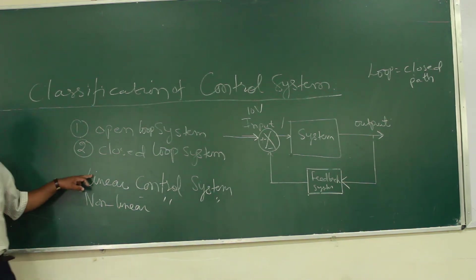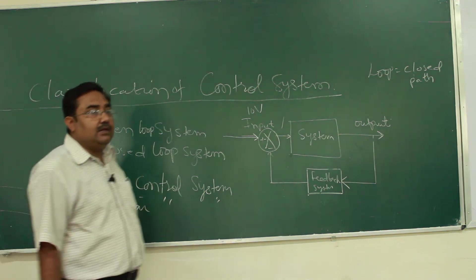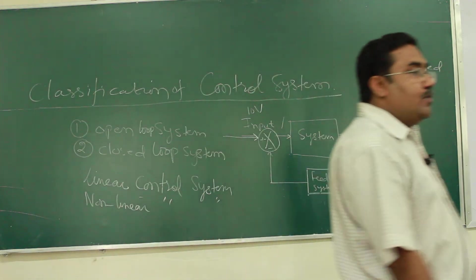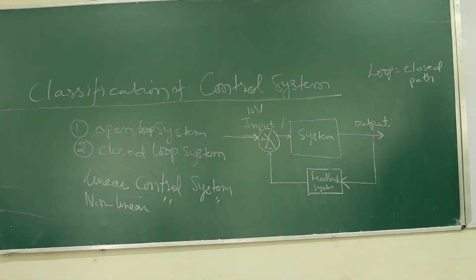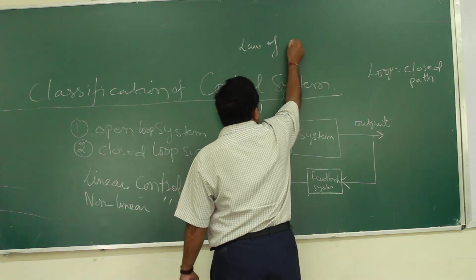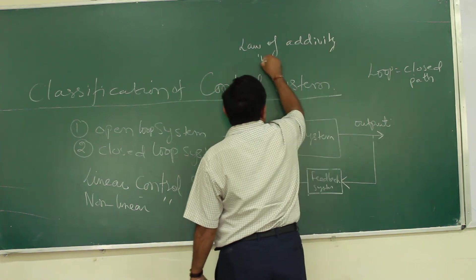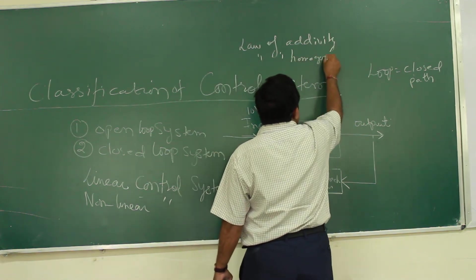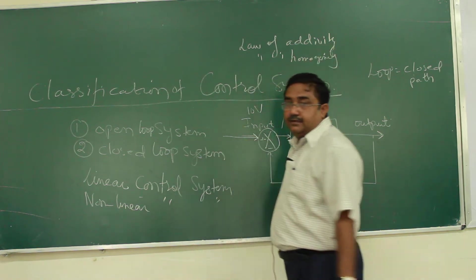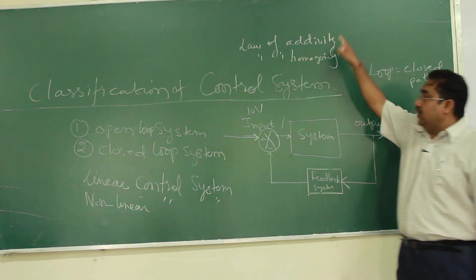A system which obeys the principle of superposition is said to be a linear control system. And superposition means obeying two laws: the law of additivity and the law of homogeneity.